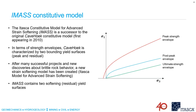Now let's see how IMAS fits within this framework of strain softening constitutive models. IMAS is a successor to the original CaveHoek constitutive model that we started using around 2010. CaveHoek, as you can tell from the name, was initially developed for simulation of cave mining. In terms of strength, it was characterized by two bounding yield surfaces: one peak strength envelope and one residual strength envelope, similar to any other constitutive model available within our codes.